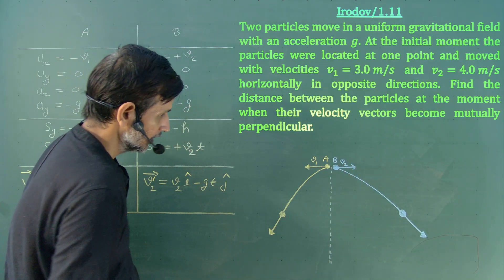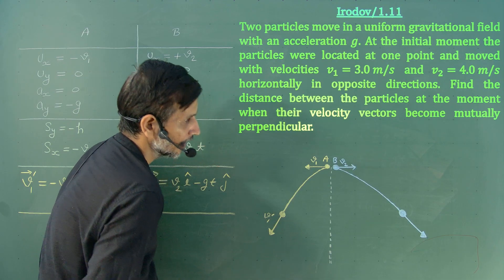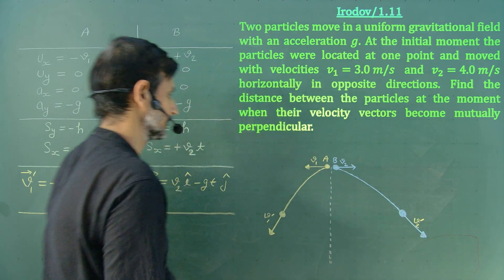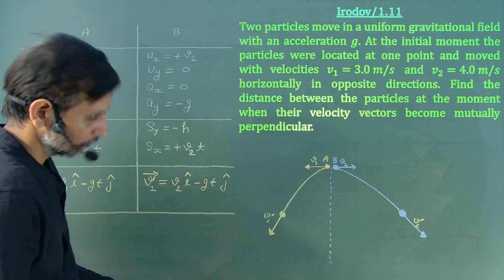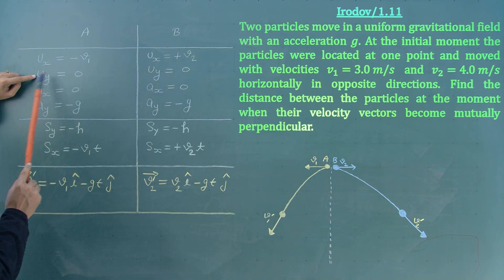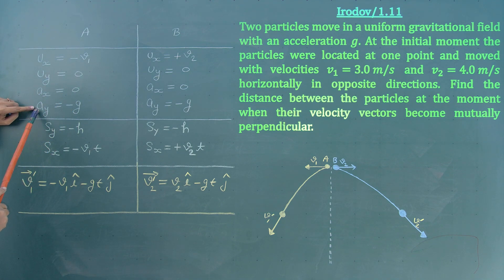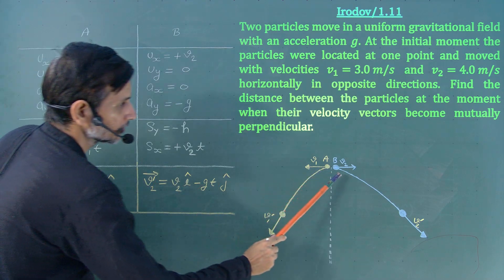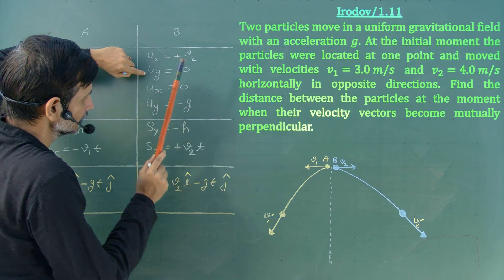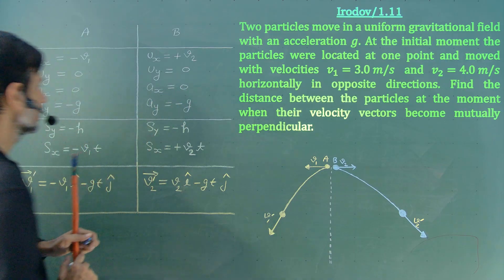After time t, the velocity vector of particle A is v1-dash and the velocity vector of particle B is v2-dash. For particle A: initial velocity in x is minus v1, initial velocity in y is 0, no acceleration in x, acceleration in y is minus g. Similarly for particle B: initial velocity in x is v2, initial velocity in y is 0, no acceleration in x, acceleration in y is minus g.